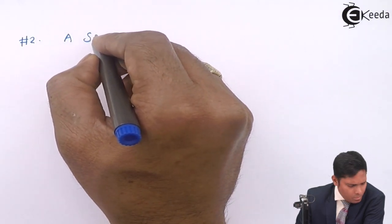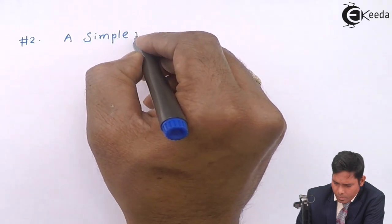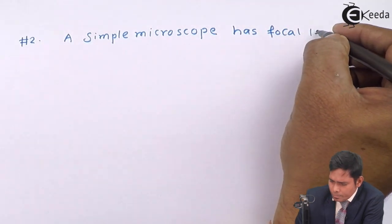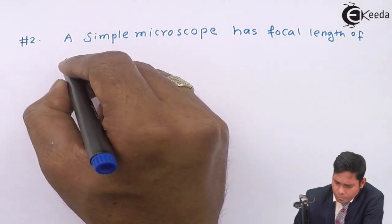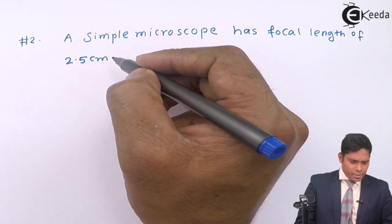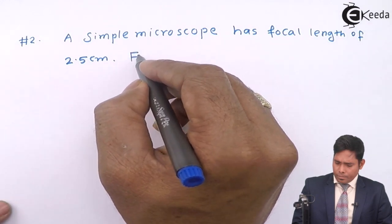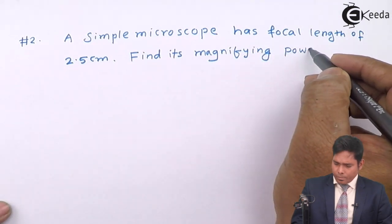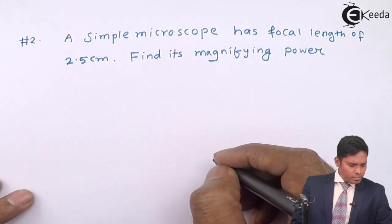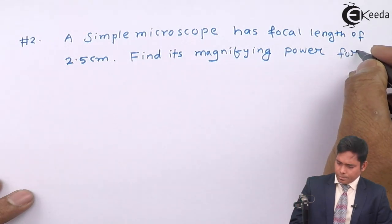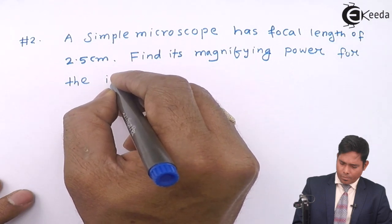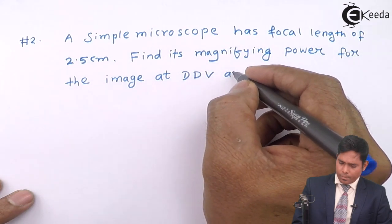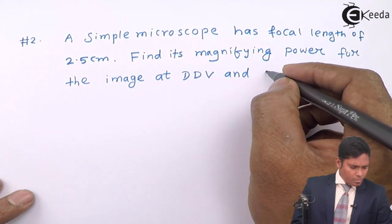A simple microscope has focal length of 2.5 cm. Find its magnifying power for the image at DDV and position of object.